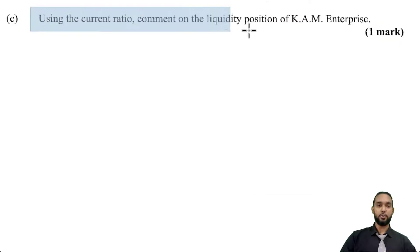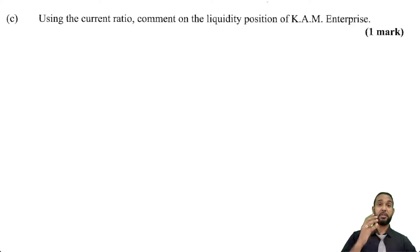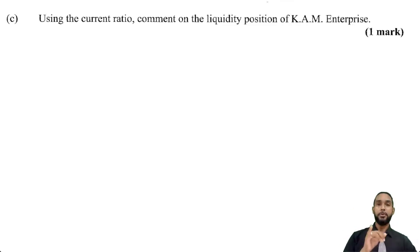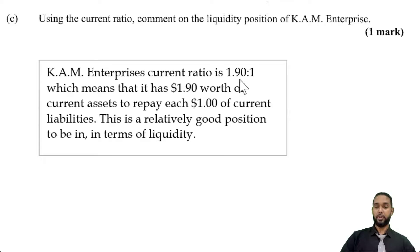Part C says, using the current ratio, comment on the liquidity position of KAM Enterprise. If you need to look at ratios, their calculations and meanings, I'll put a card to my ratios playlist and a link in the description below. At the CSEC Form 5 level, it's not heavy on commentary — they ask a lot of basic stuff. KAM Enterprise's current ratio is 1.9 to 1, which means it has $1.90 worth of current assets to repay each $1 of current liabilities. This is a relatively good position to be in in terms of liquidity.